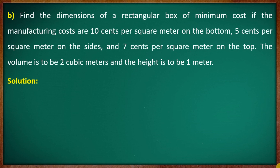The next question B: find the dimensions of a rectangular box of minimum cost. Manufacturing costs are 10 cents per square meter on the bottom, 5 cents per square meter on the sides, and 7 cents per square meter on the top. Volume is 2 cubic meters, height is 1 meter. We need length, breadth, and height.